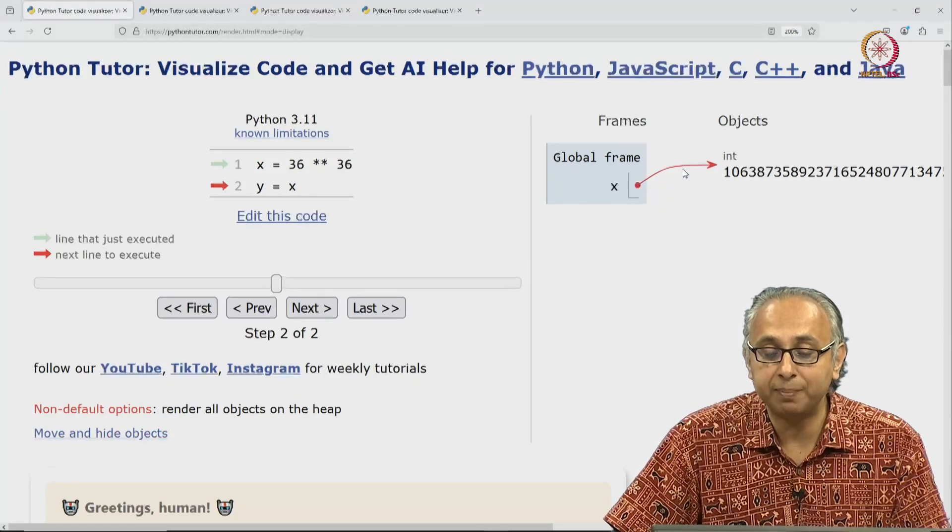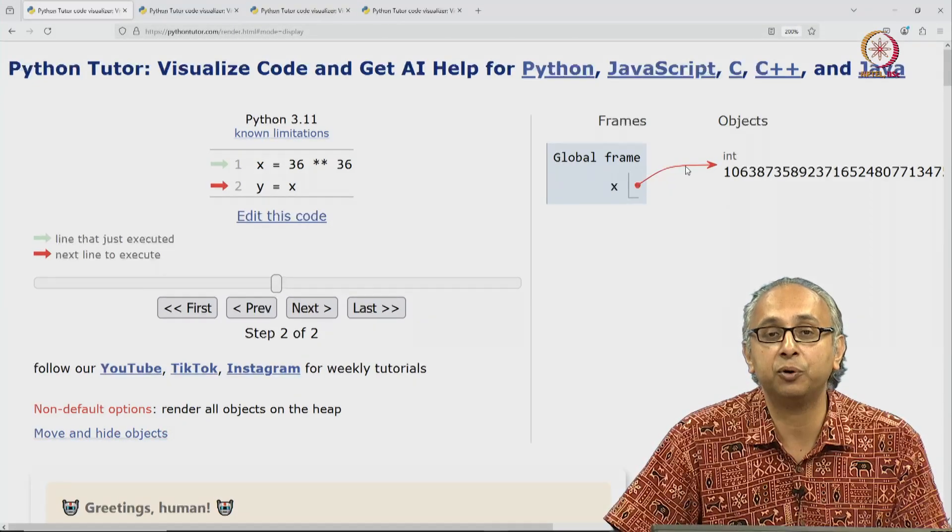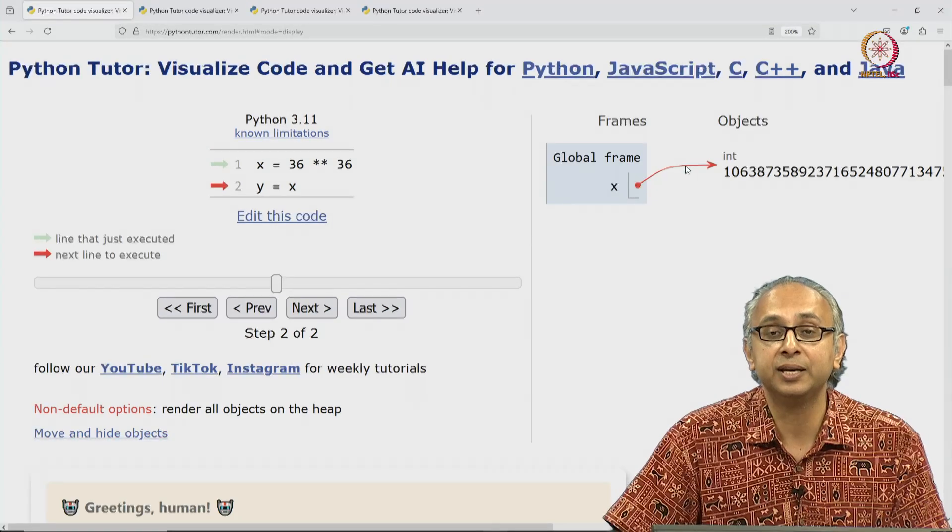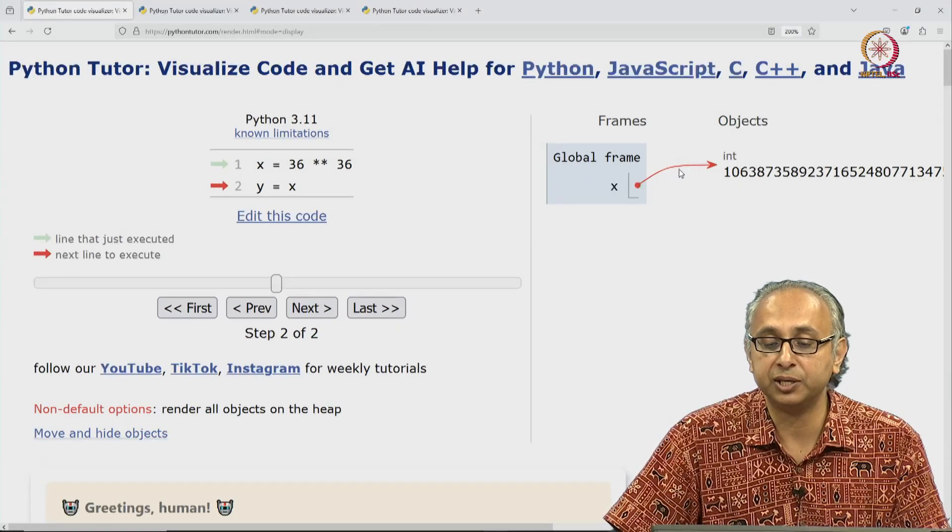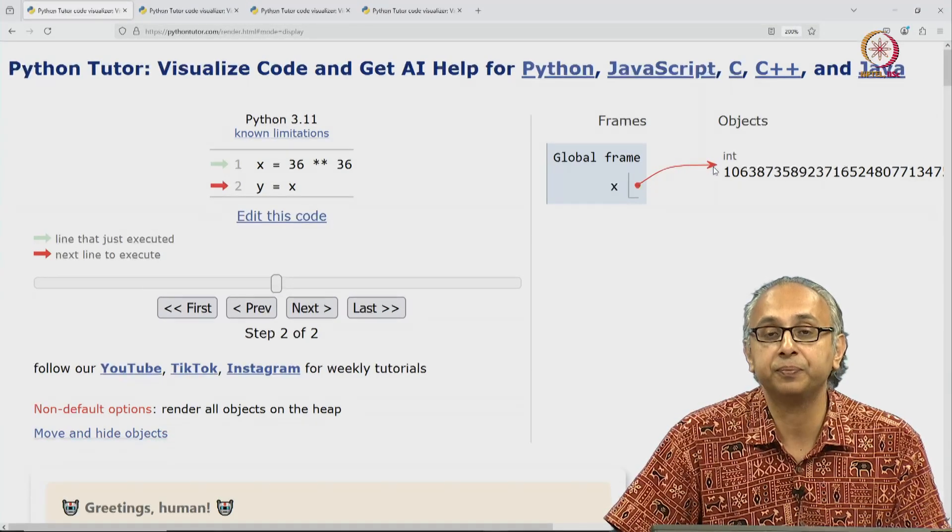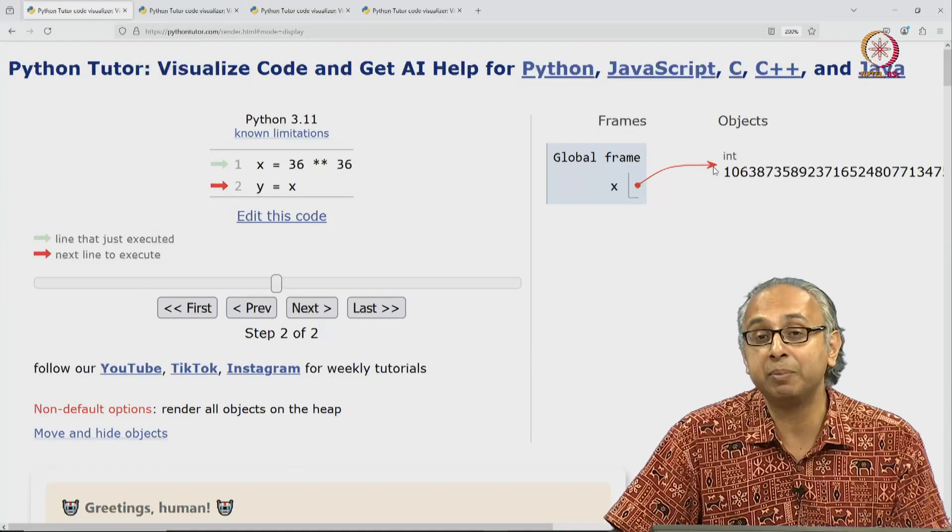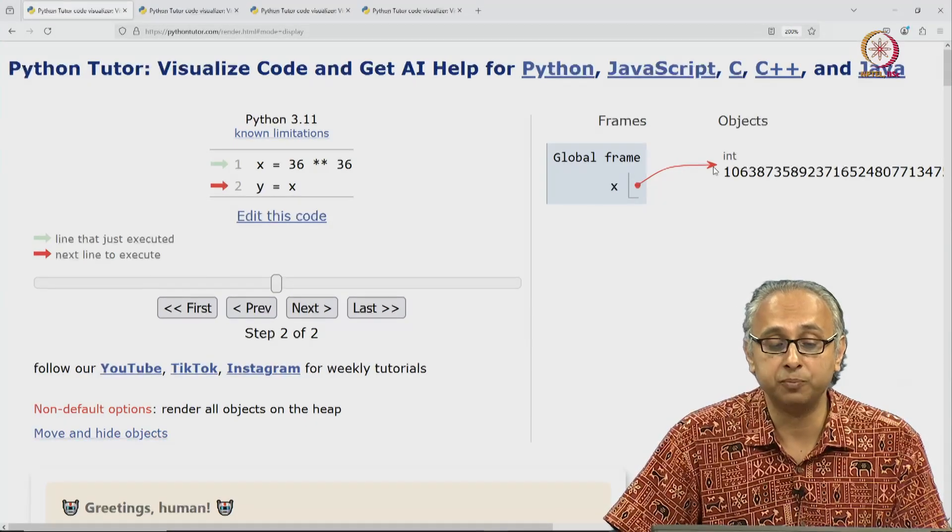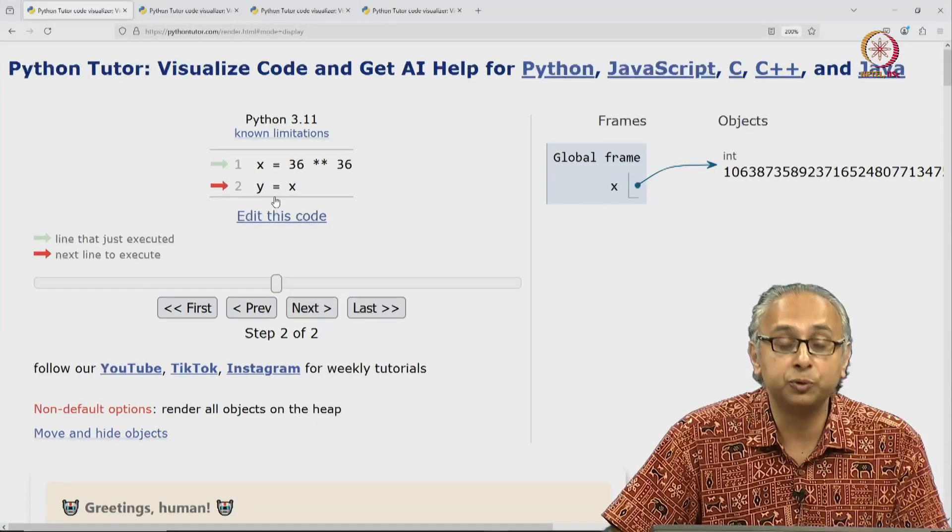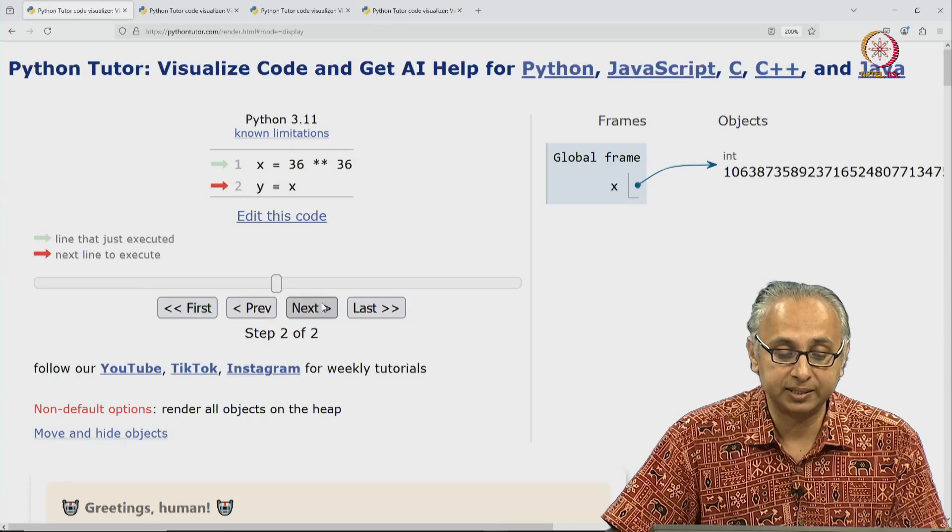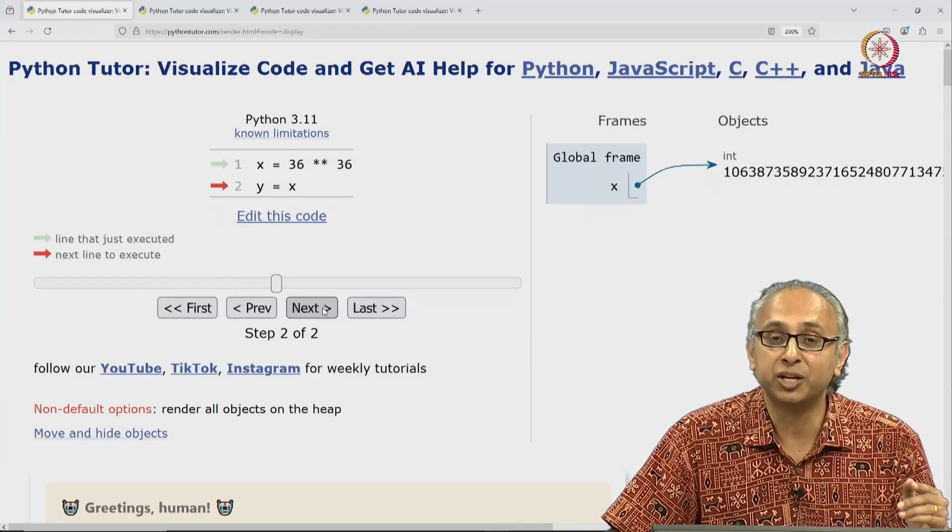So I can actually move my mouse over here and you will see that this arrow highlights in red. So it's easy to see which variable is referring to this object. So x is labeling or is assigned to this object. Now, when I do the assignment statement y is equal to x, when I click on next, observe what happens.